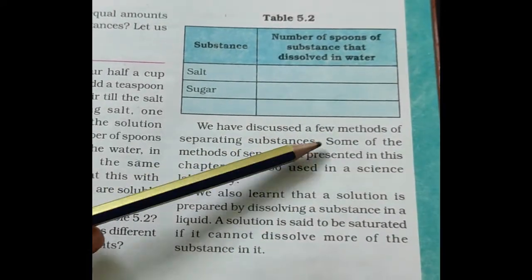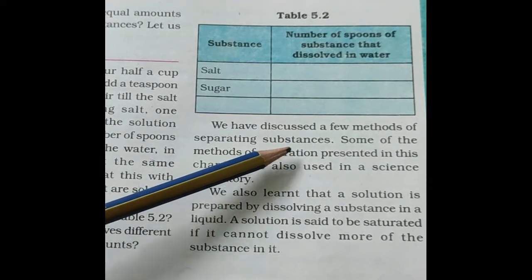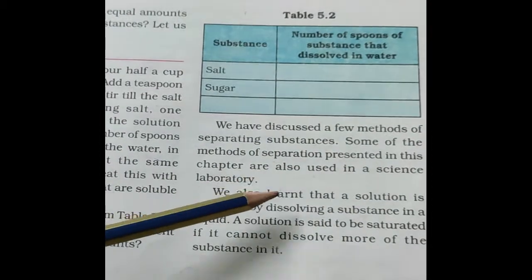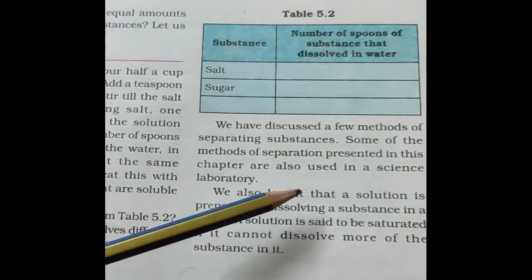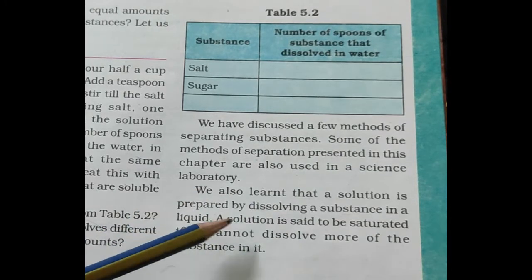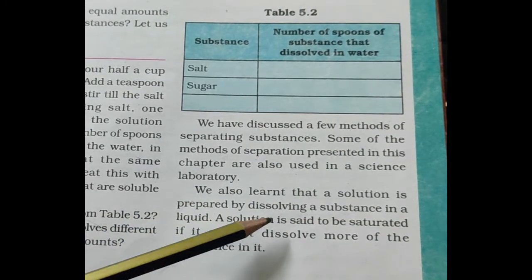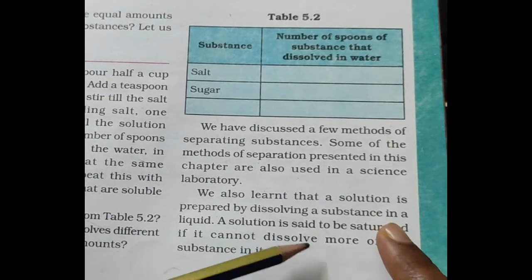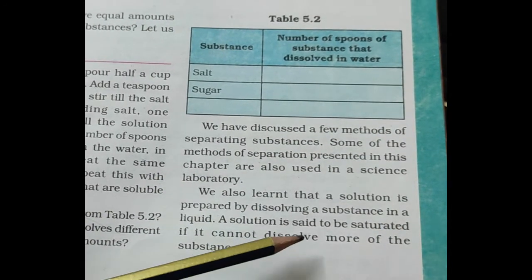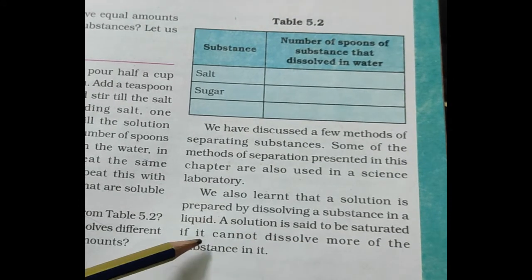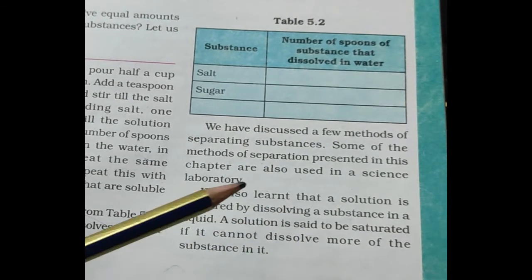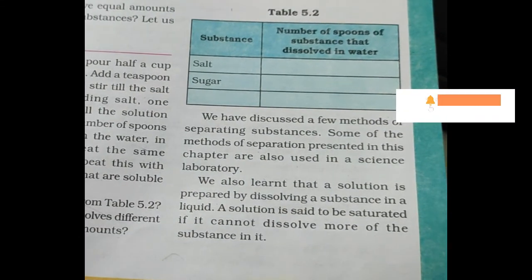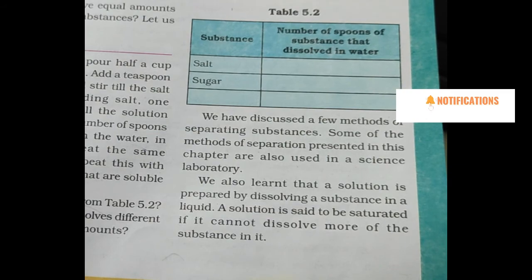We have discussed a few methods of separating substances. Some of these methods of separation are also used in a science laboratory. A solution is prepared by dissolving a substance in a liquid. A solution is said to be saturated if it cannot dissolve any more of the substance in it. Students, that's all for today's session. Keep watching my channel, subscribe, and support me. Thank you.